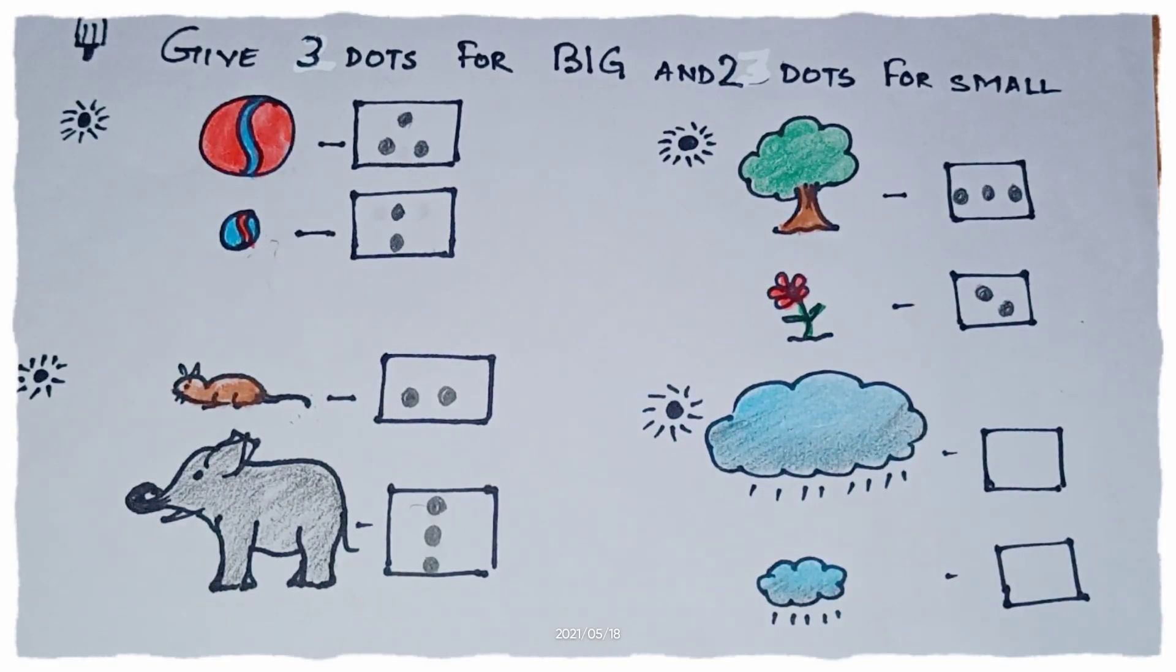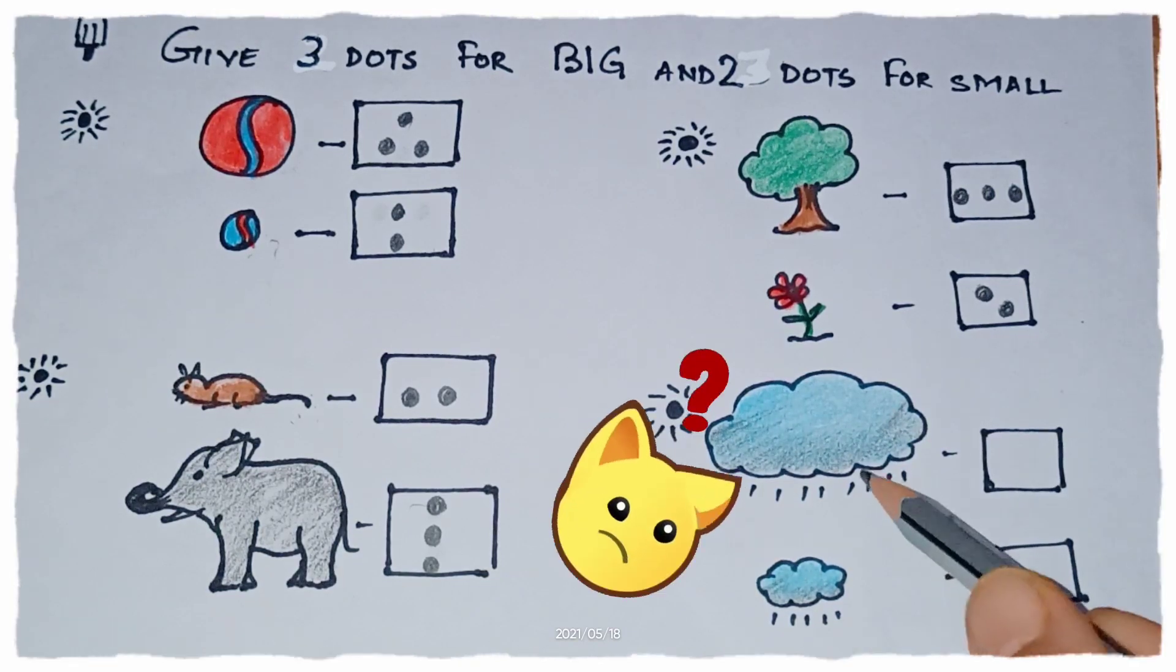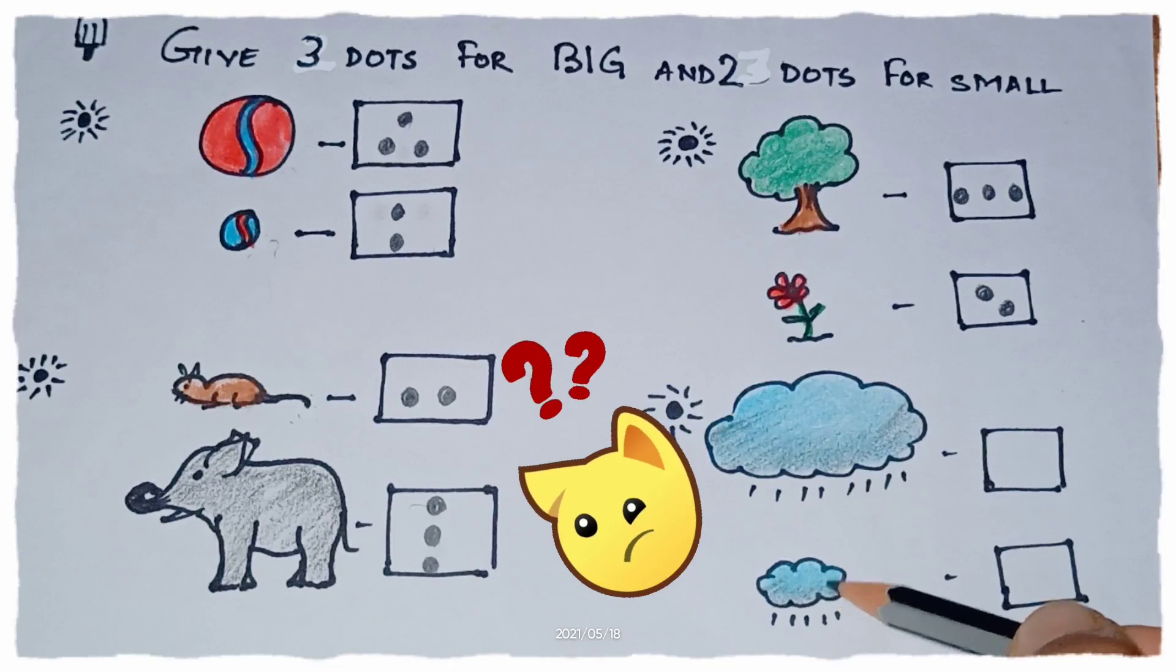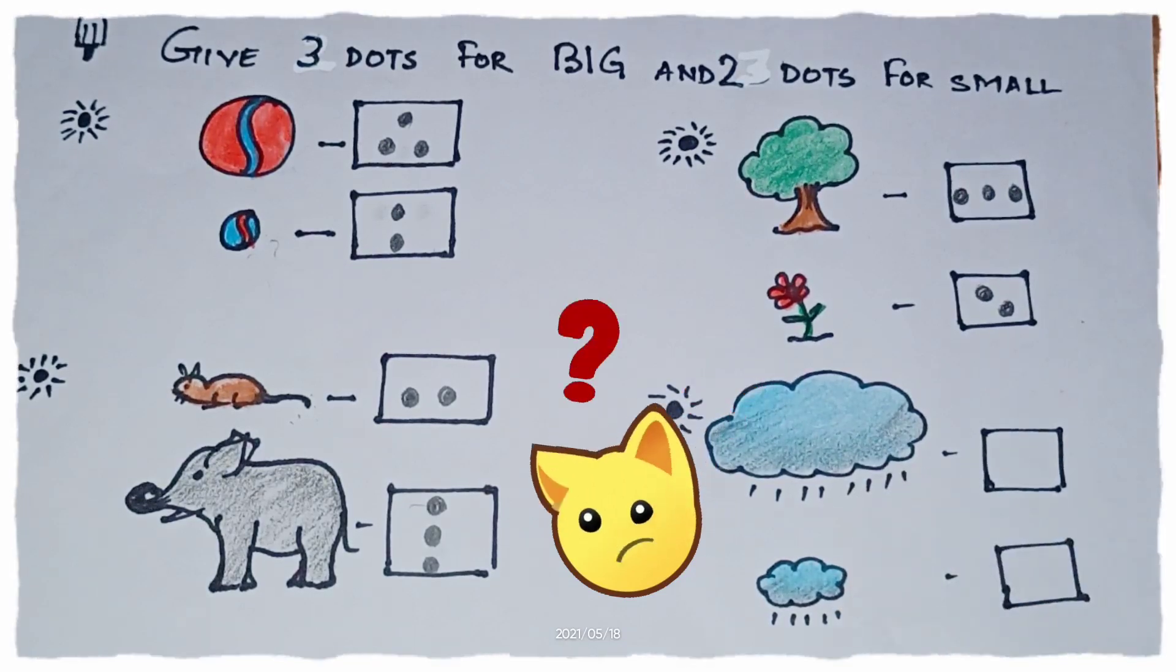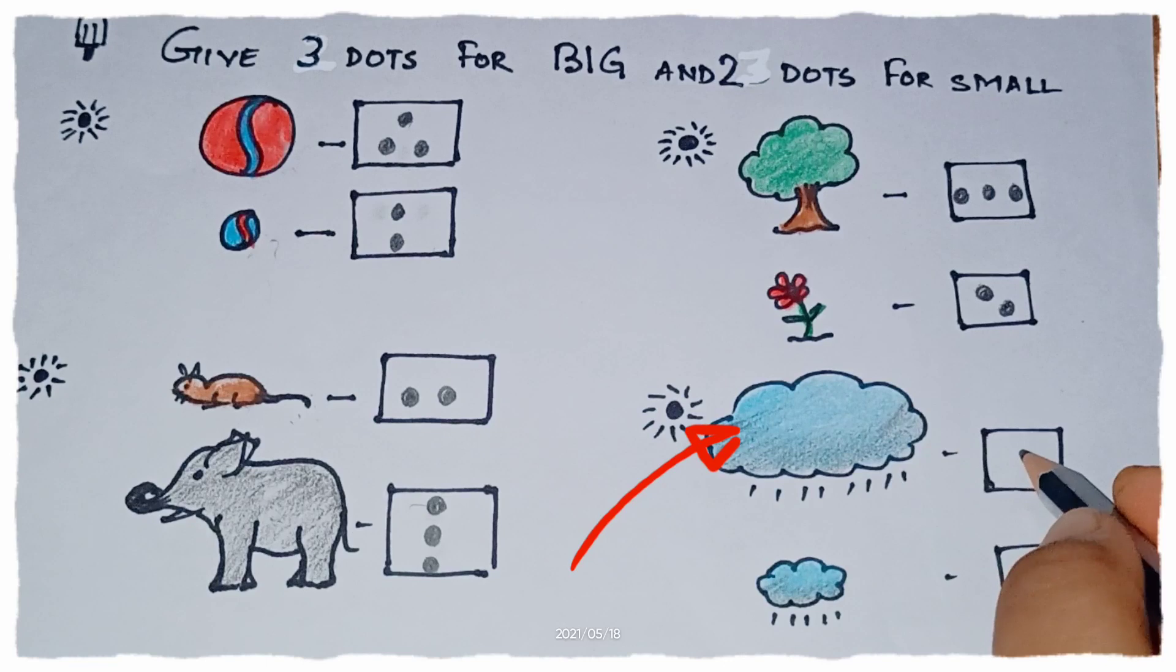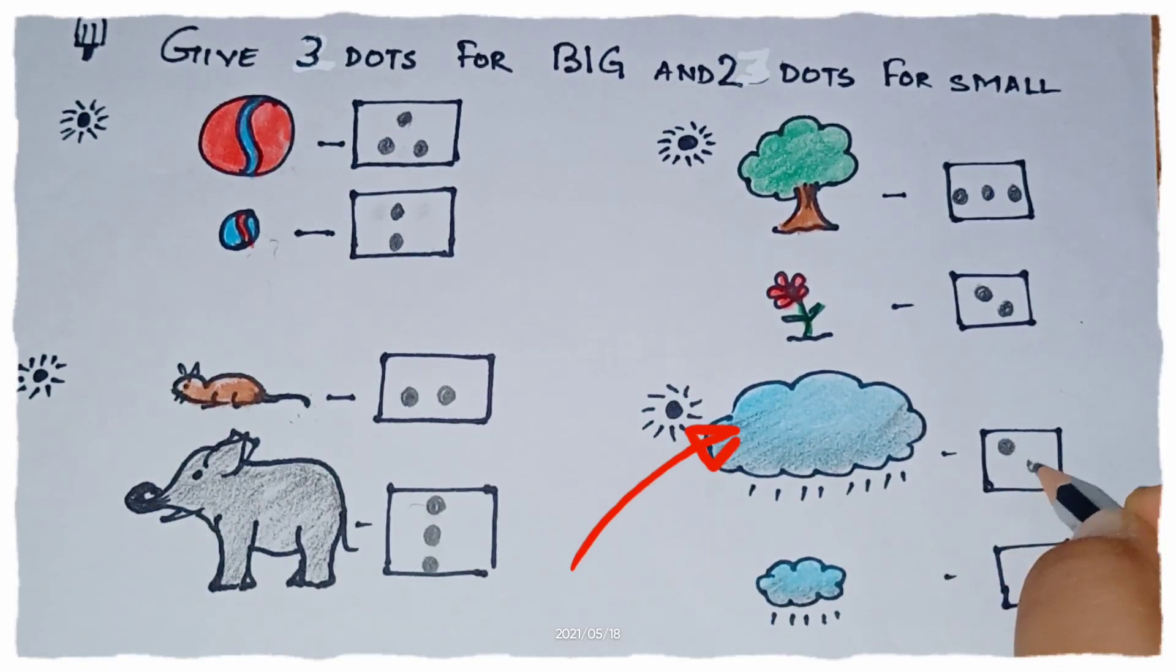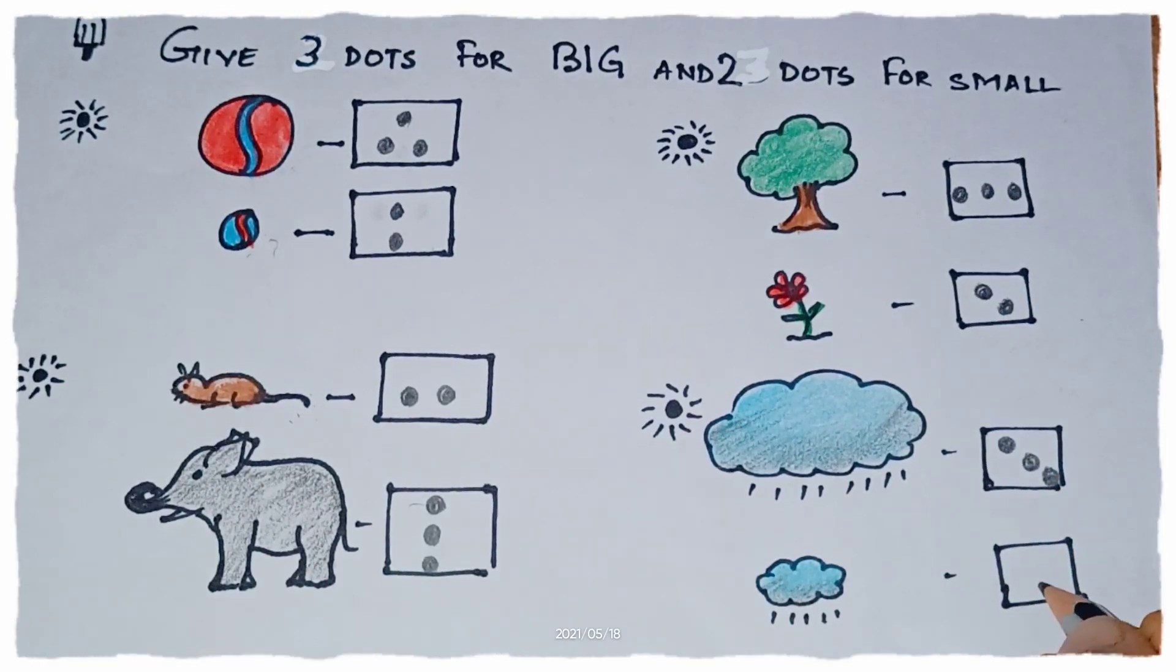Now in this picture we have clouds. Which cloud is big? This one. So how many dots? Three dots. What do clouds bring? Clouds bring us rain. And in the small cloud we will give here two dots.